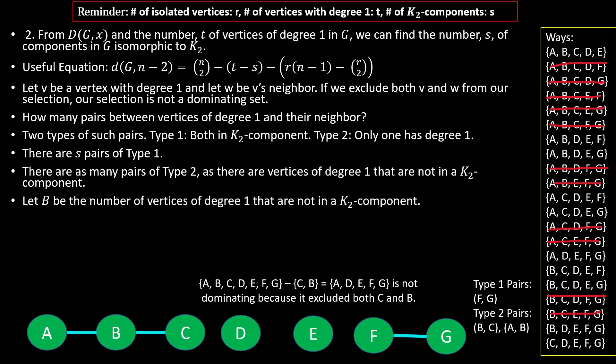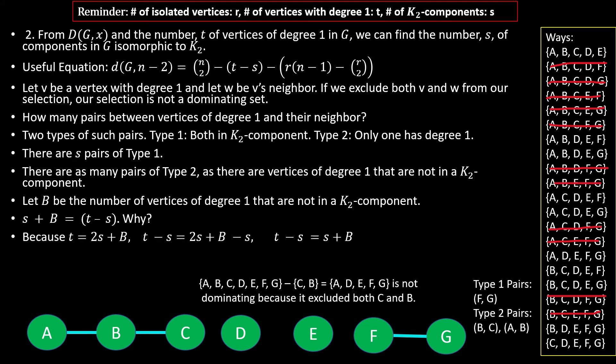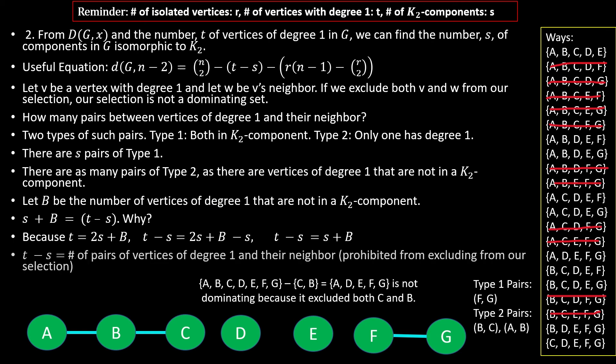The number of those type 2 pairs equals the number of vertices of degree 1 not in a K2 component, call it b. The sum s plus b also equals the middle term t minus s, because each of the two vertices in a K2 component is a vertex of degree 1, so t equals 2s plus b. That means t minus s equals 2s plus b minus s, or s plus b. This proves that the middle term in our equation counts the number of pairs between vertices of degree 1 and their sole neighbor.